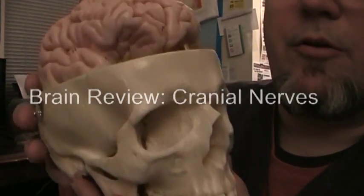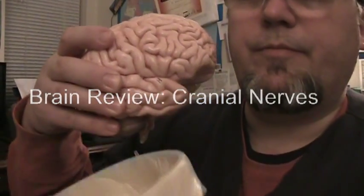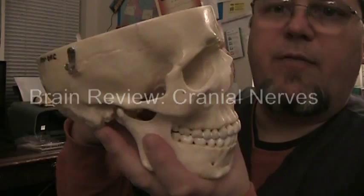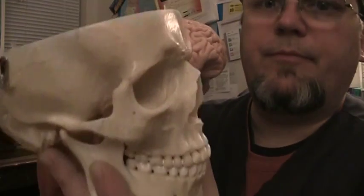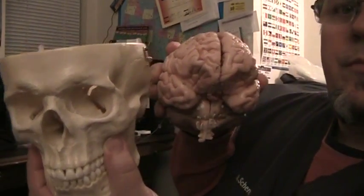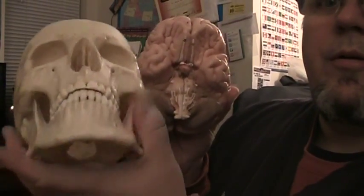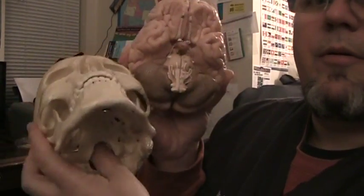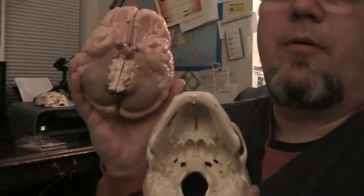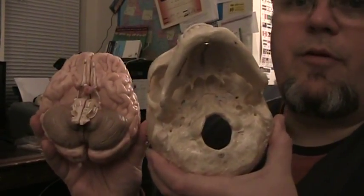We're going to take a look at the cranial nerves. There's a lateral view of the brain and a frontal view, inferior view.